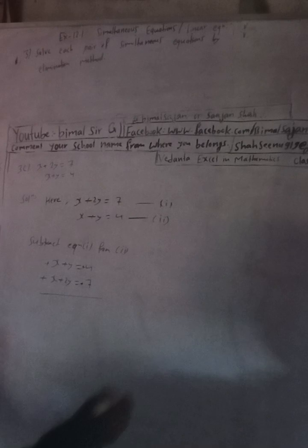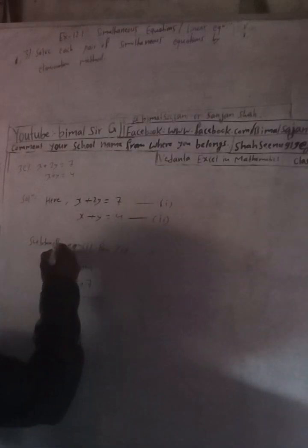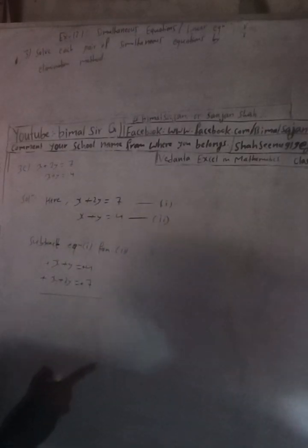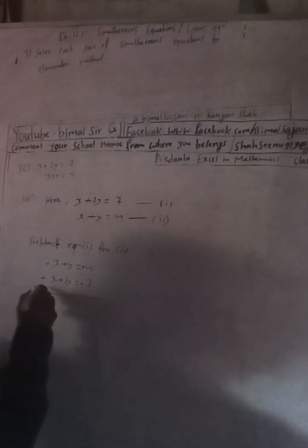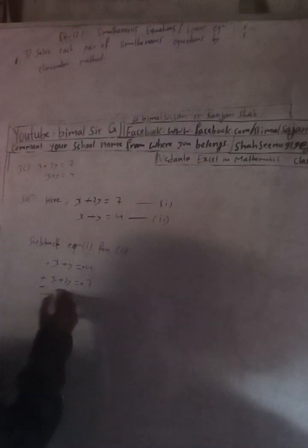Now change the signs of equation 1. Why are we changing the sign? Because in subtraction, we have to change the sign. In addition, there is no need to change. So: plus becomes minus, plus becomes minus, plus becomes minus.